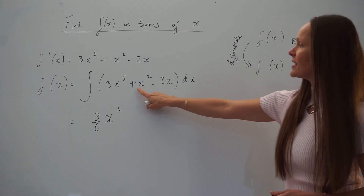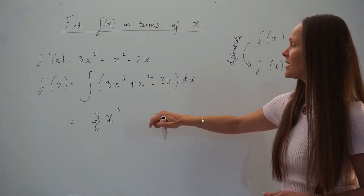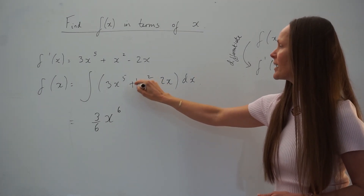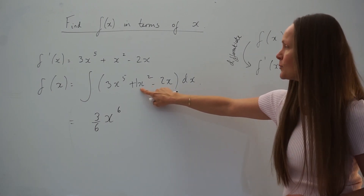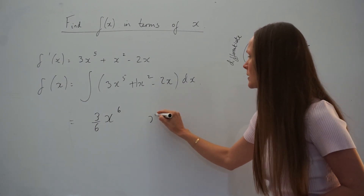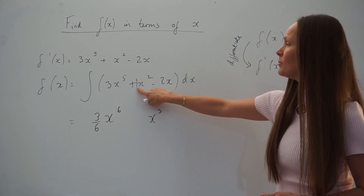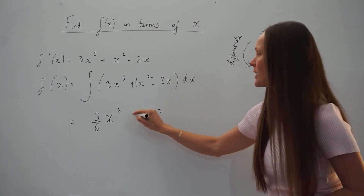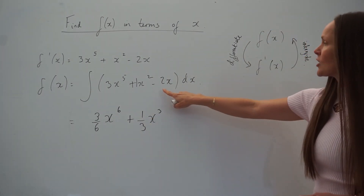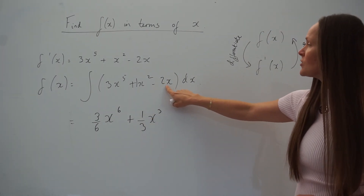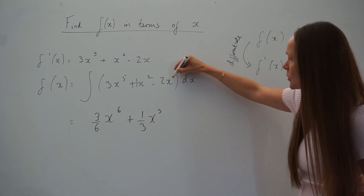Now if we look at the next term, we have plus x squared, which is the same as plus 1x squared. If I raise this power by 1, I'm left with x cubed, and then we're dividing the number 1 by the new power, which is 3. So we have 1 over 3.